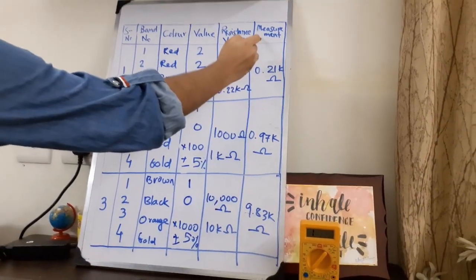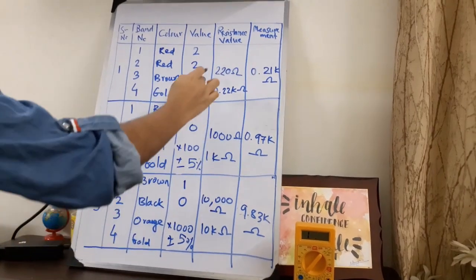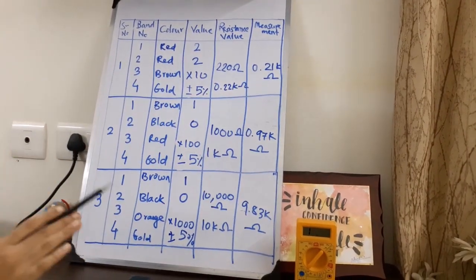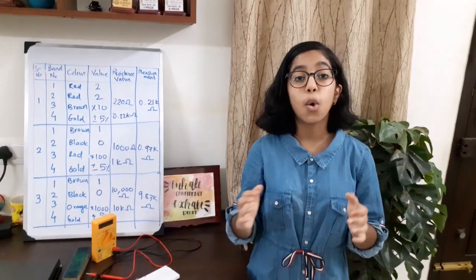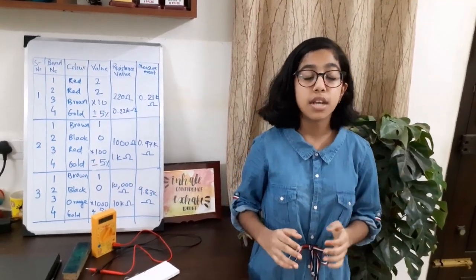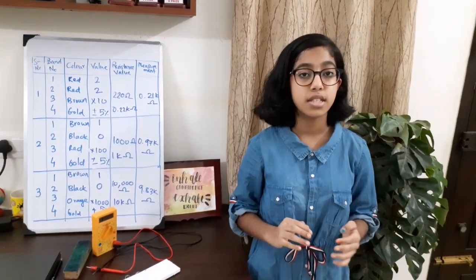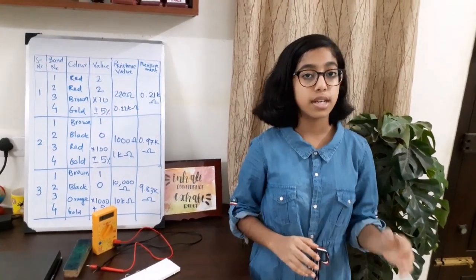Our measurement values are matching with the values that we found using the color coding, and they are within plus minus 5%. So in this way, we have learned how to calculate the resistance of a resistor using color coding.